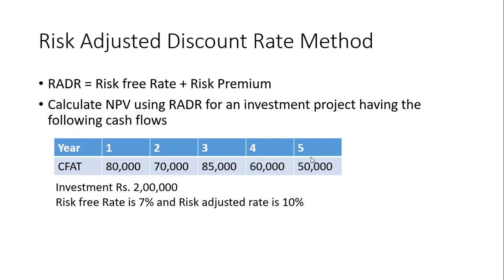These are the estimated future cash flows from the project. The project cost is 2 lakh, which you are going to incur today — you will invest 2 lakh today. In the next year you will get 80,000; second year 70,000; third year 85,000; fourth year 60,000; and fifth year 50,000.